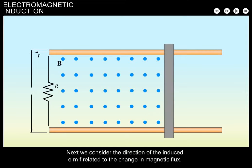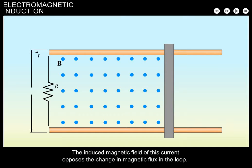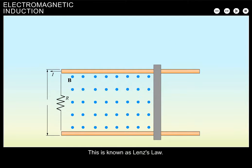Next, we consider the direction of the induced EMF related to the change in magnetic flux. The induced EMF creates a current. The induced magnetic field of this current opposes the change in magnetic flux in the loop. This is known as Lenz's Law.